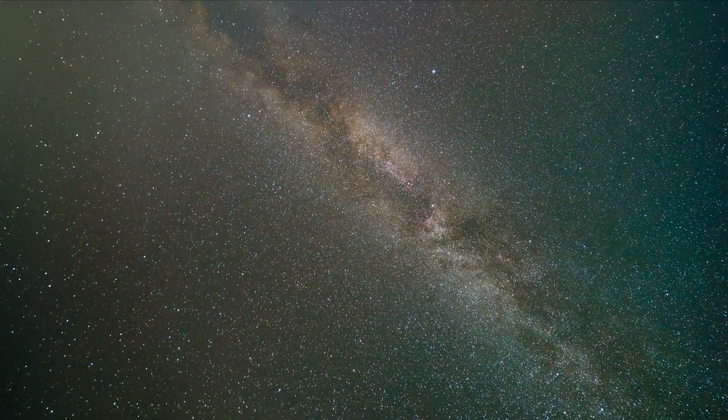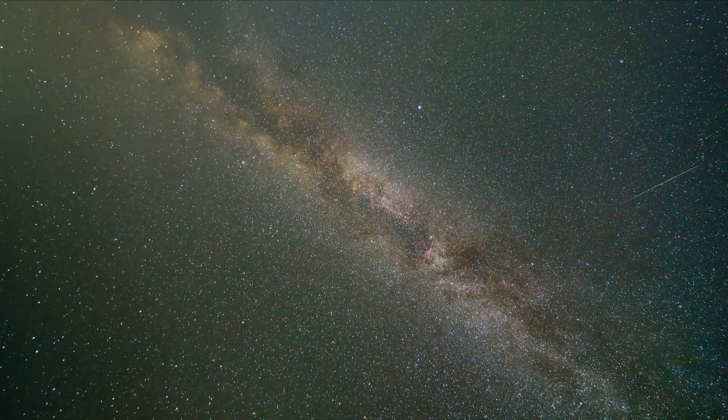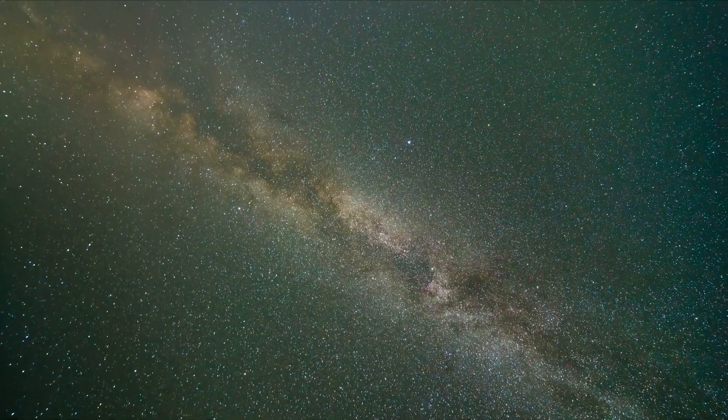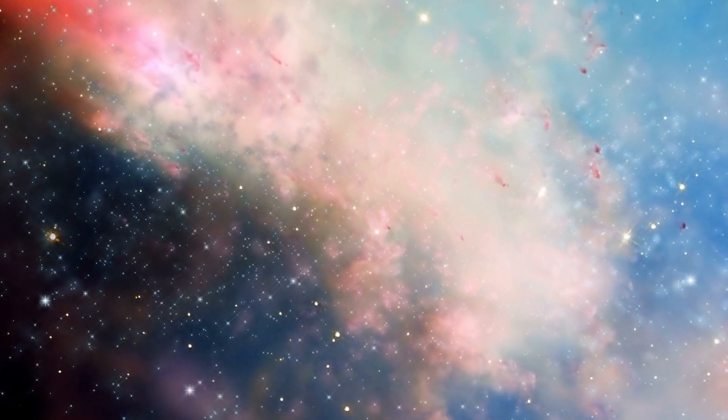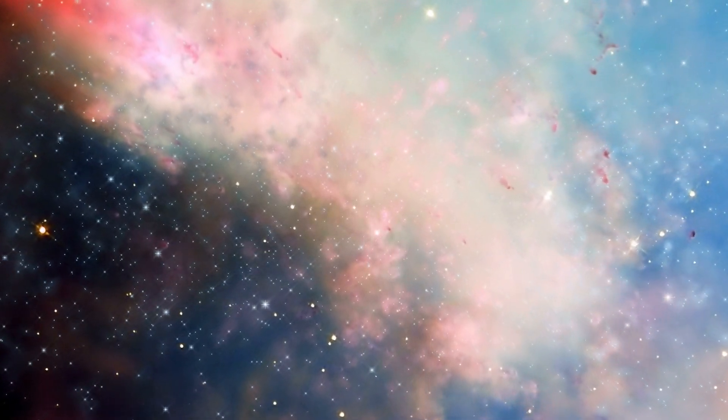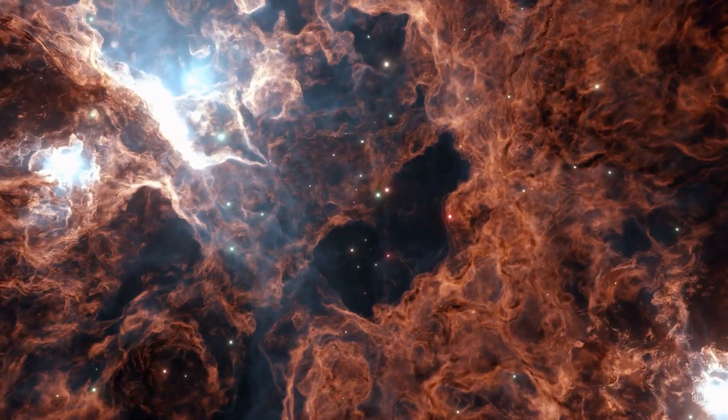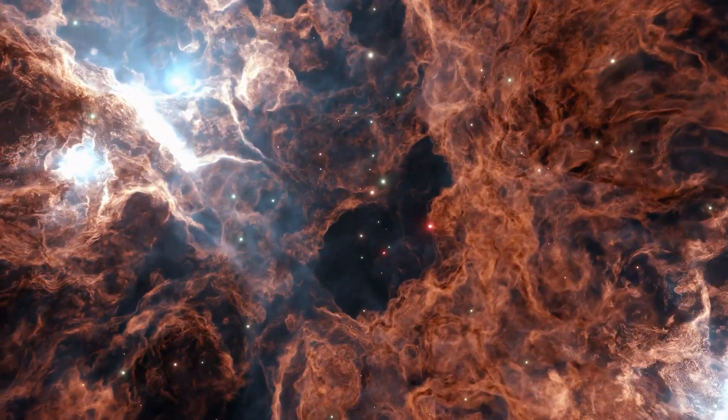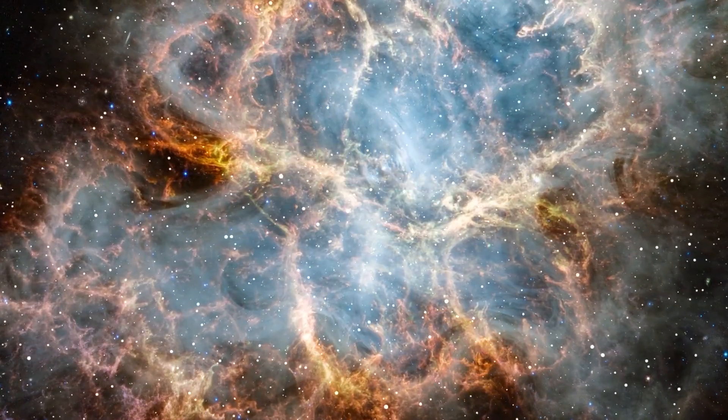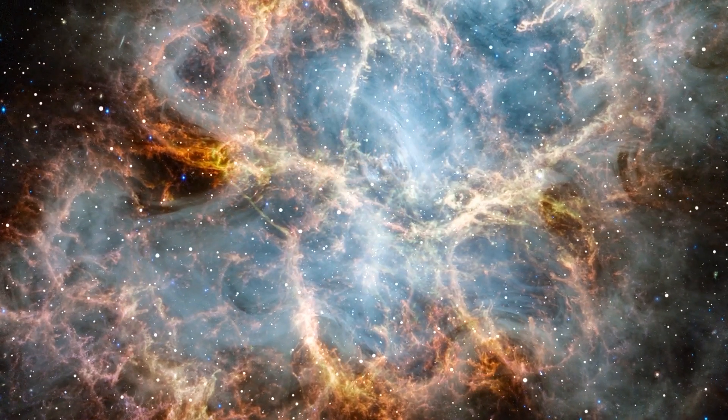After the Big Bang, which took place around 13.8 billion years ago, the universe was initially an extremely hot and dense mixture of protons, electrons and other elementary particles. For the first 380,000 years, the universe was too hot for atoms to exist. During this period, the universe consisted mainly of ionized plasma.